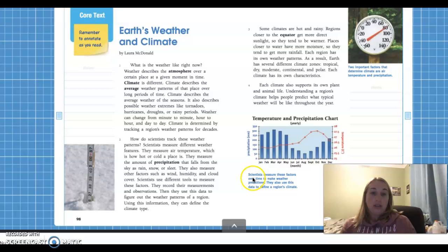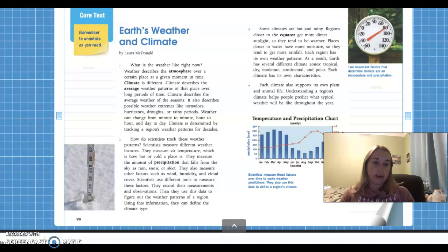So let's read this last little tidbit, these two little things in the pictures. Scientists measure these factors over time to make weather predictions. They also use this data to define a region's climate. Two important factors that determine climate are air temperature and precipitation, right? So those are the two things and we talked about that yesterday. Remember tropical rainforest, hot and wet. Desert, hot, dry. Polar, cold and wet. So the temperature and how much precipitation falls in that area determines these climates.